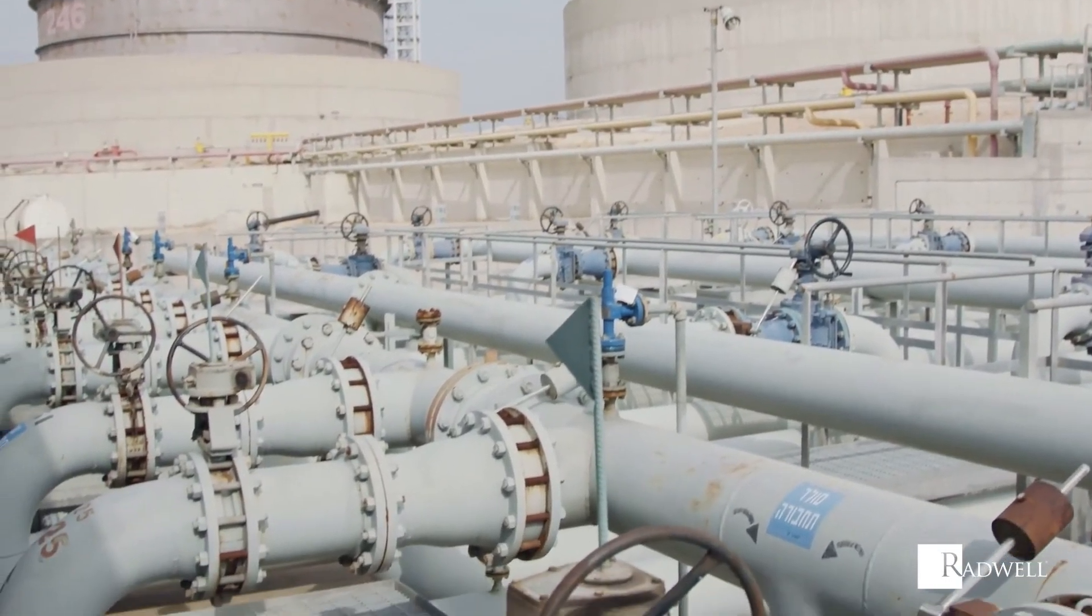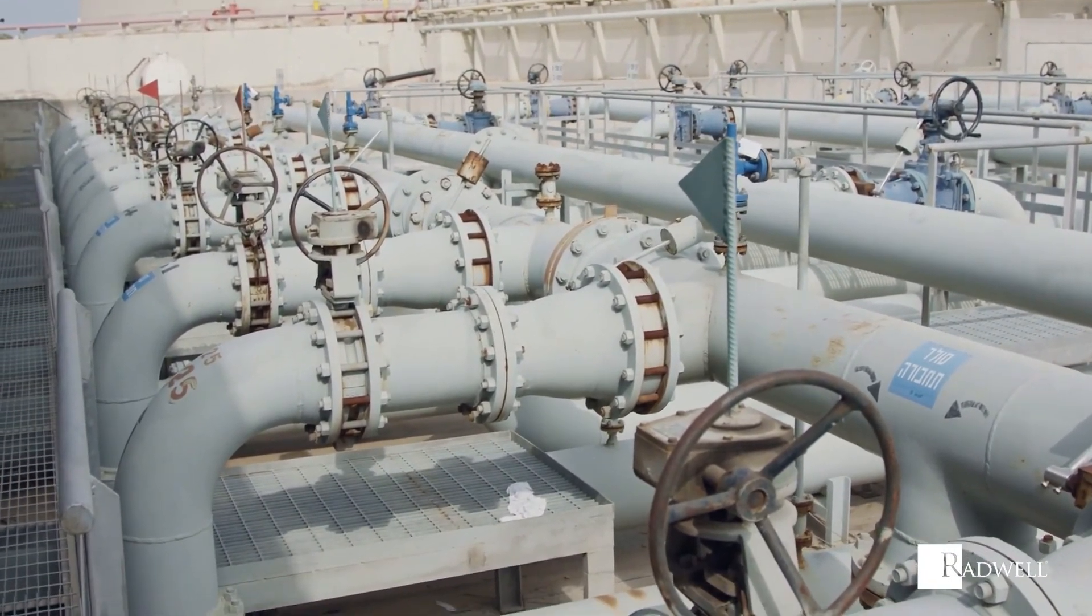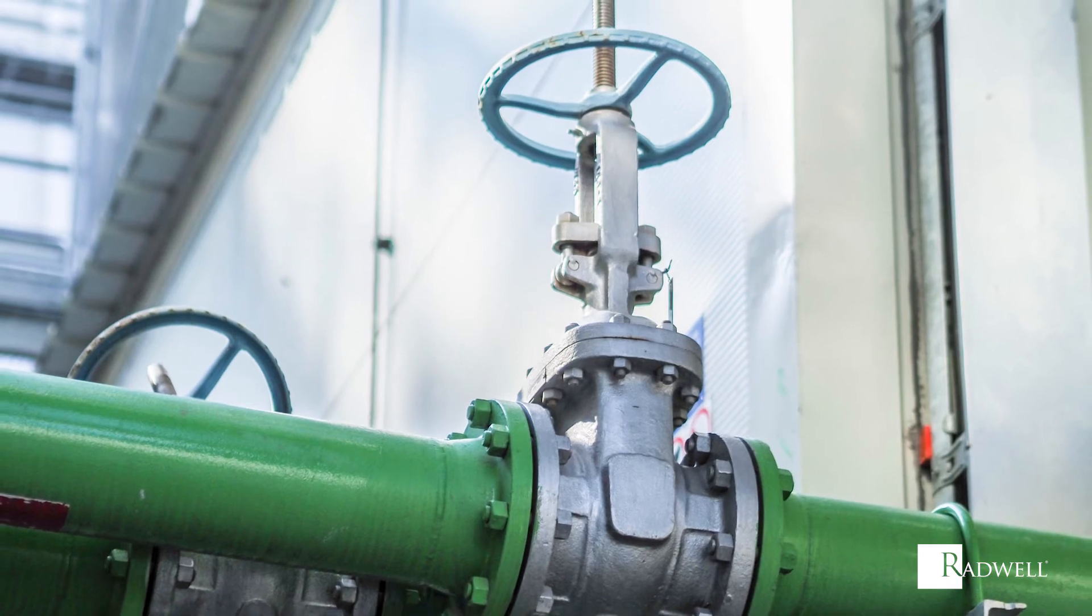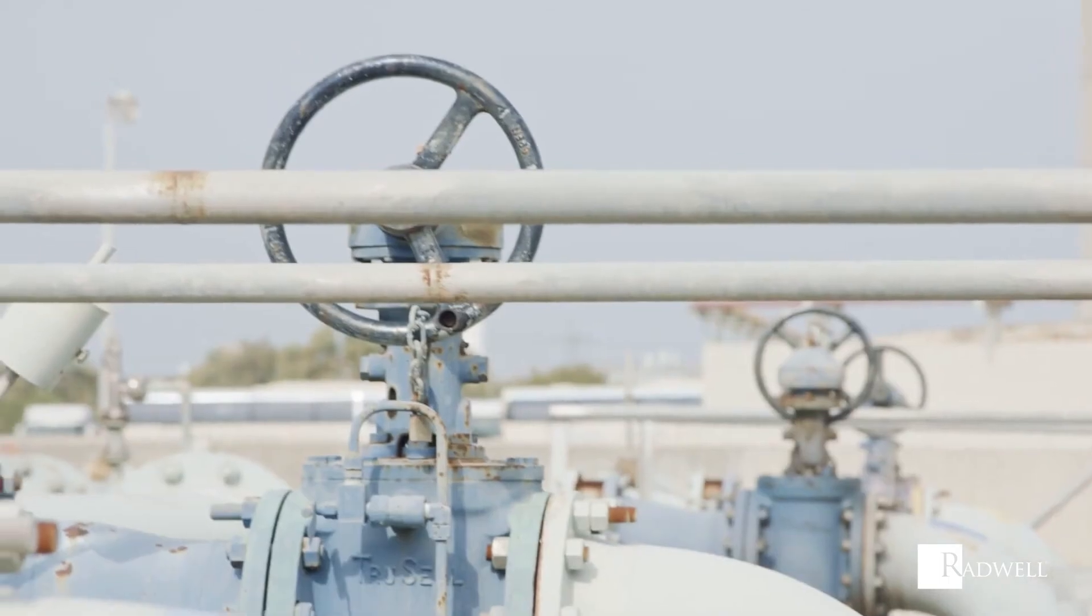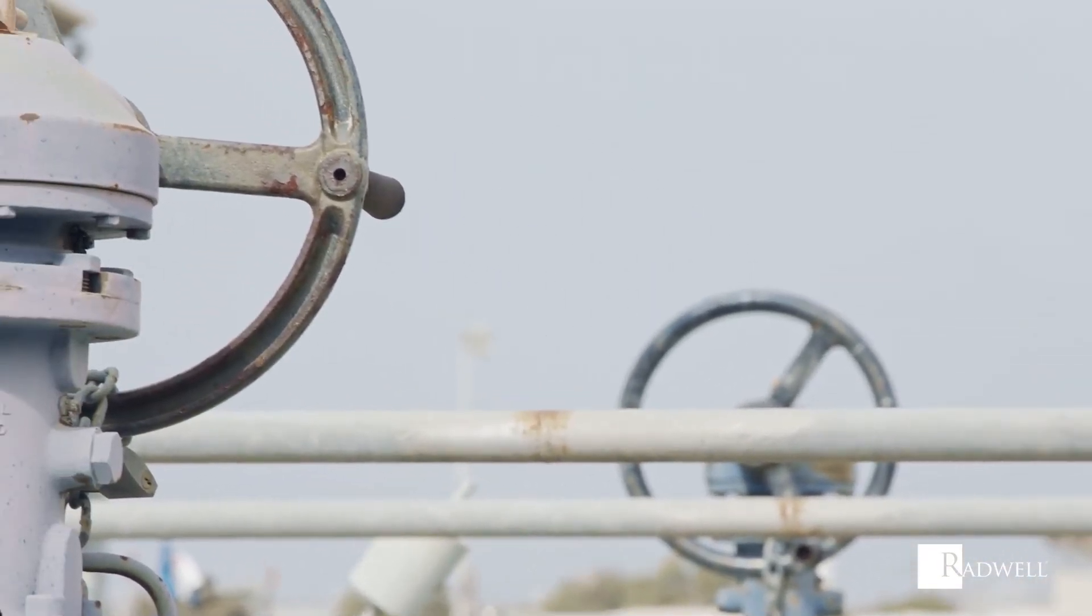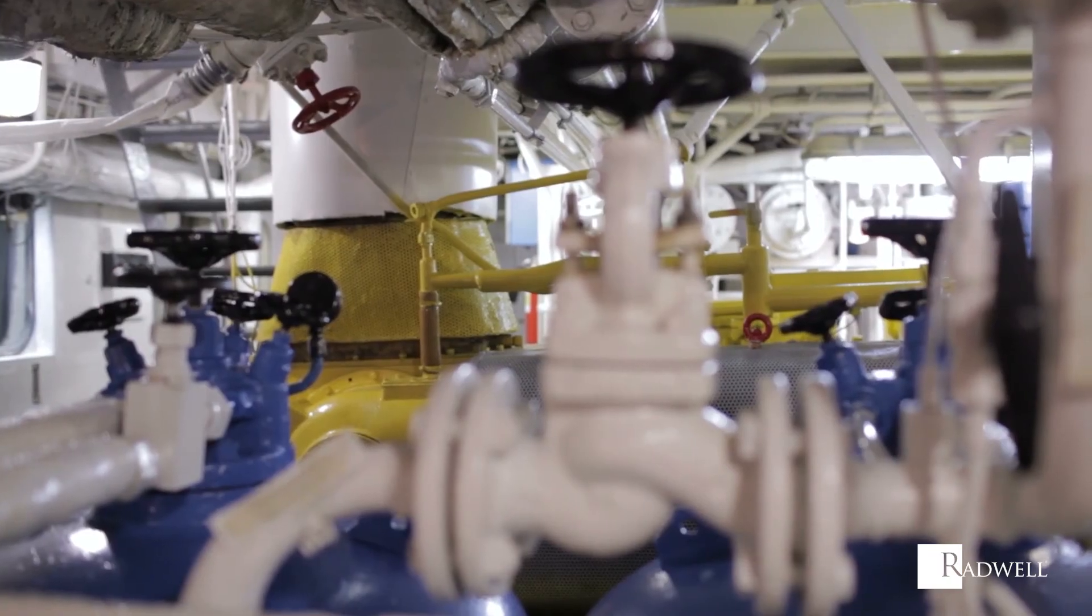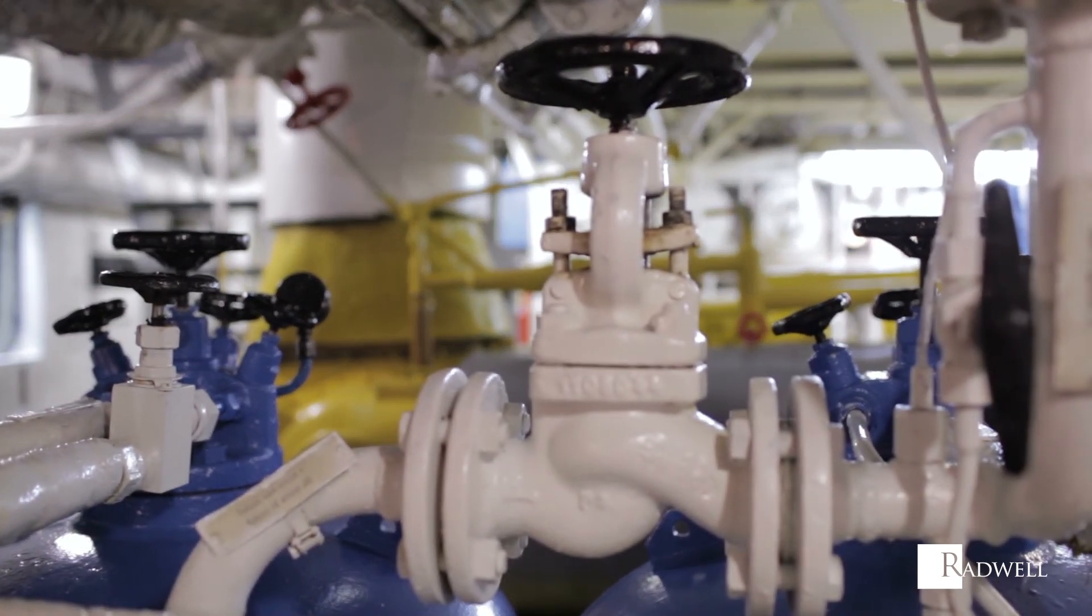How a globe valve operates begins with the hand wheel being turned. This will, in turn, screw the stem up or down. The plug or disc connected to the stem will come into contact with the valve seat, closing off the fluid flow. When lifted away from the valve seat, fluid will be able to flow through.